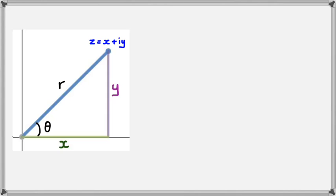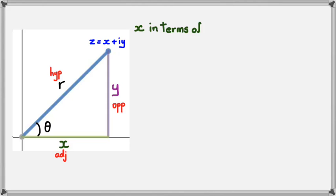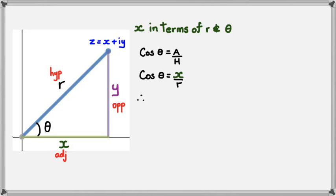R is the hypotenuse of the right angle triangle, where theta is the angle. Y is the opposite side and x is the adjacent side. To write x in terms of R and theta — since we're working with adjacent and hypotenuse — we know that cos theta equals adjacent over hypotenuse, which means cos theta equals x divided by R.